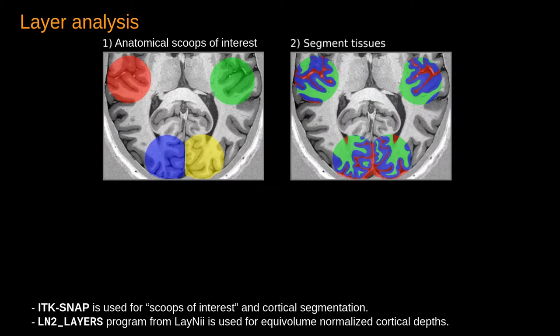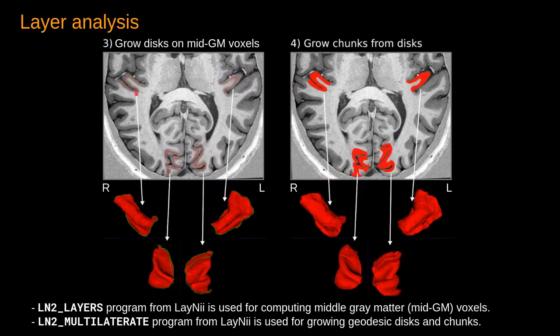Our further analysis consisted of determining four anatomical regions. These regions are generated as spherical scoops centered around our macroanatomical regions of interest. Inside each scoop, we did segmentation to determine white matter, gray matter, and outside of the gray matter voxels.